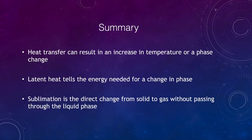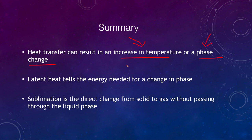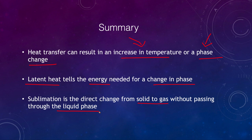In summary: heat transfer results in either an increase in temperature or a phase change, or both, depending on how much heat is transferred. We examine these in stages. The latent heat tells you the amount of energy needed for the phase change, while specific heat tells you the energy for a temperature increase. Sublimation is the direct change from solid to gas without passing through the liquid phase — common with CO₂ on Earth. On Mars, water has no liquid phase and sublimates directly from solid to gas due to insufficient atmospheric pressure.